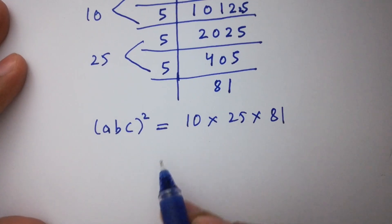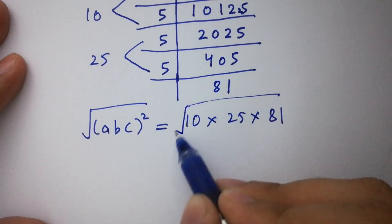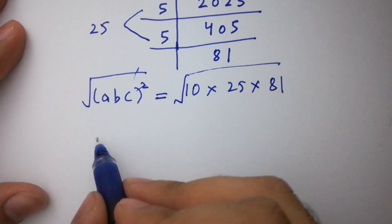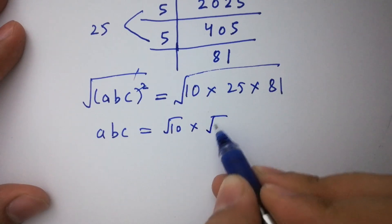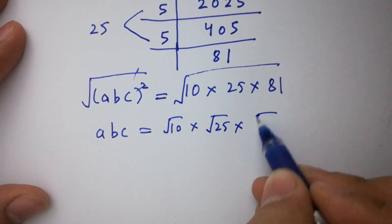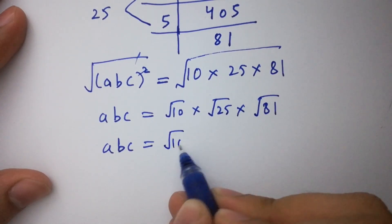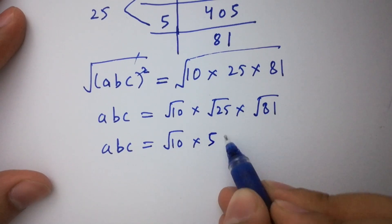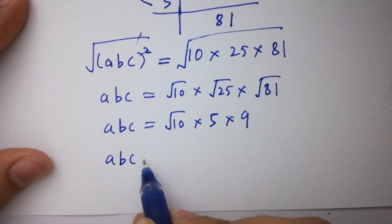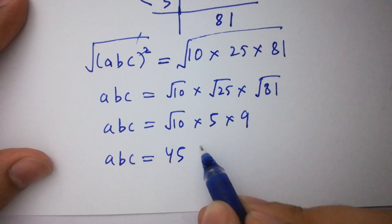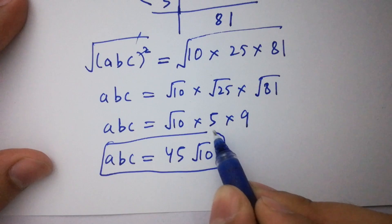To solve this, take the square root on both sides. The square root cancels from the square. We have abc equal to square root of 10 times square root of 25 times square root of 81. So abc equals square root of 81, which is 9, times 5, which is 45, times square root of 10. So abc equals 45 square root of 10.